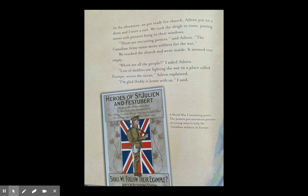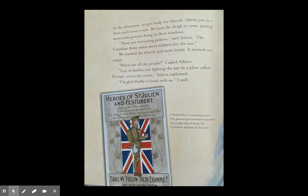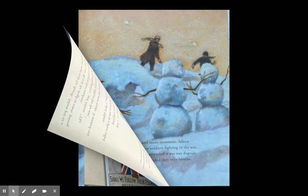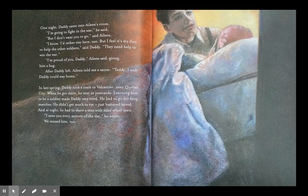In the afternoon we got ready for church. Aileen put on a dress and I wore a suit. We took the sleigh to town, passing stores with pictures in their windows. 'Those are recruiting posters,' said Aileen — the Canadian Army wanted more soldiers for the war. At church it seemed very empty. 'Lots of daddies are fighting the war in a place called Europe, across the ocean,' Aileen explained. One night Daddy came into Aileen's room. 'I'm going to fight in the war,' he said. 'But I don't want you to go,' said Aileen. 'I know — I'd rather stay here too, but I feel it's my duty to help the other soldiers,' said Daddy. 'I'm proud of you, Daddy,' Aileen said, giving him a hug. After Daddy left, Aileen told me a secret: 'Teddy, I wish Daddy could stay home.'